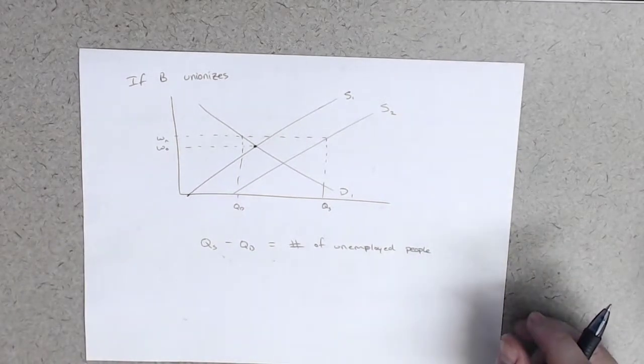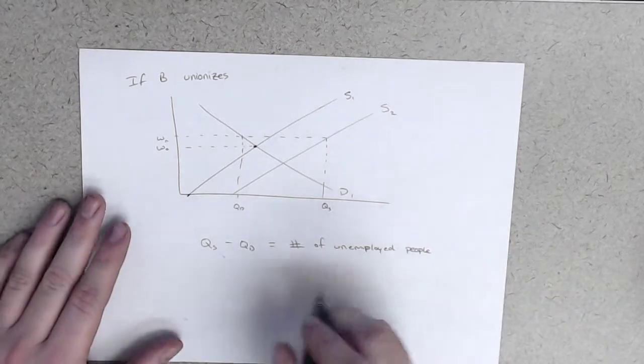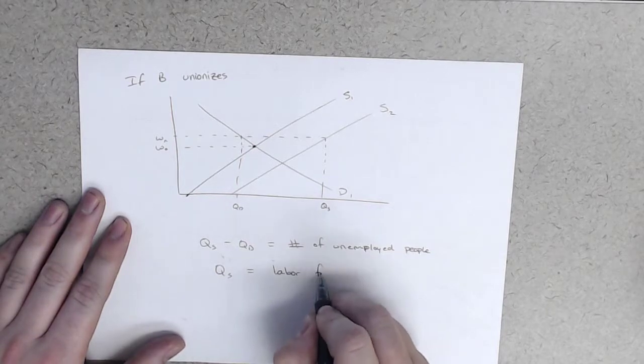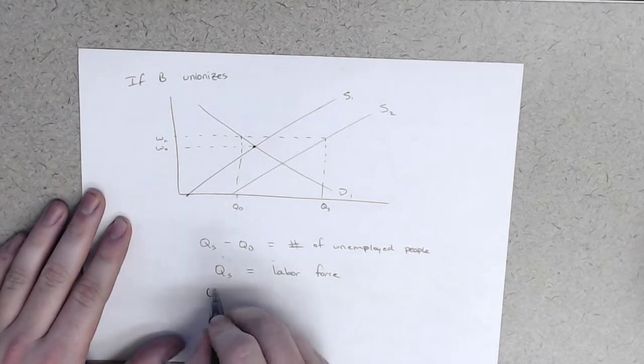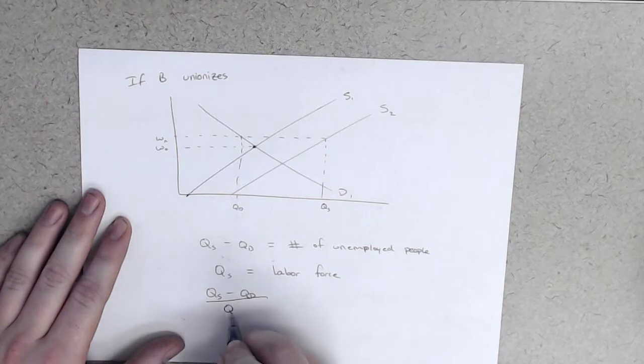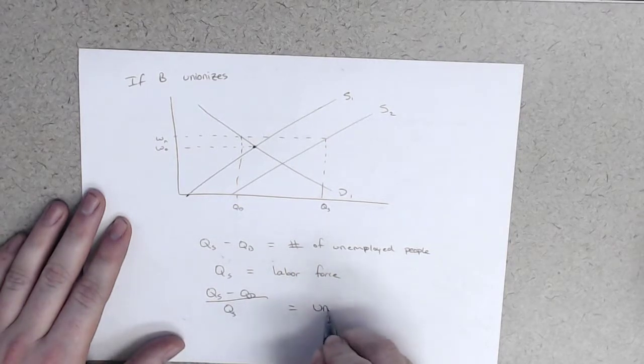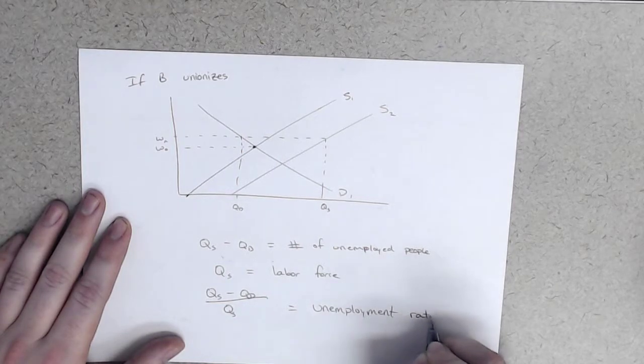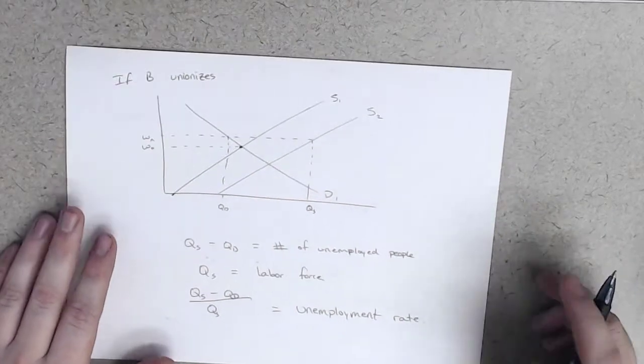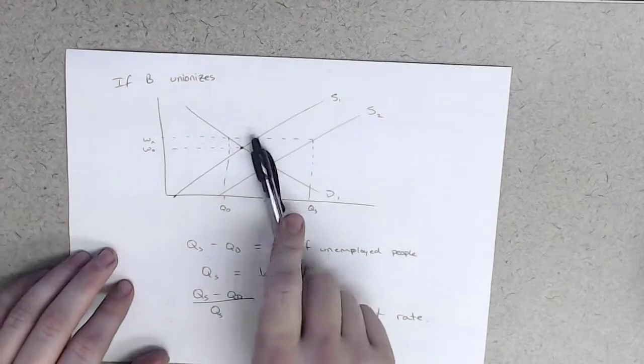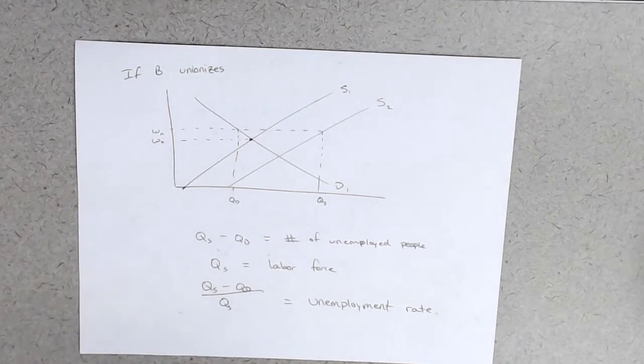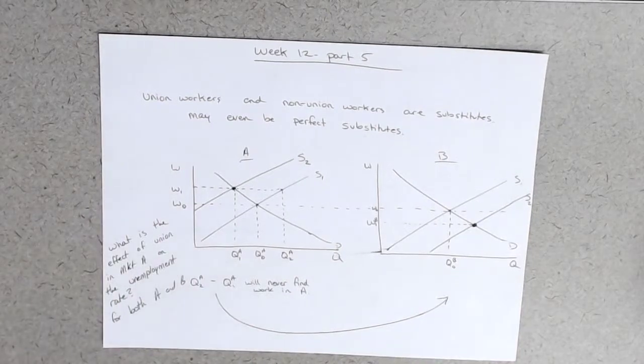Or QS minus QD equals the number of unemployed people. And QS equal to labor force. So QS minus QD all over QS is equal to the unemployment rate. If B unionizes, you can see that there's going to be some unemployment. But what happens if B doesn't unionize? Is there any unemployment? And so, you're going to have to, yeah, I'm excited to see your answer to this question. I want to see it. So I'm not going to, we're not going to talk about it anymore.